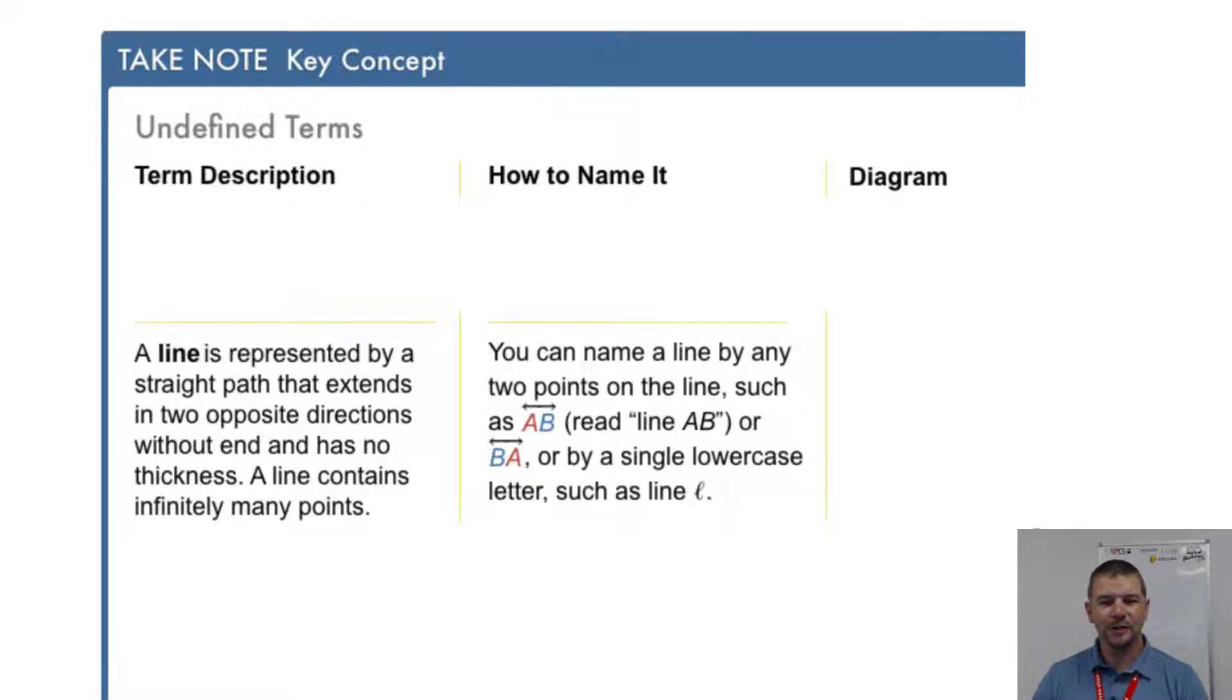How to name it? You can name a line by any two points on the line such as AB with this line symbol over the top. We read that as line AB or BA with the same line symbol over the top, read line BA, or by a single lowercase letter often written in script or cursive such as line L.